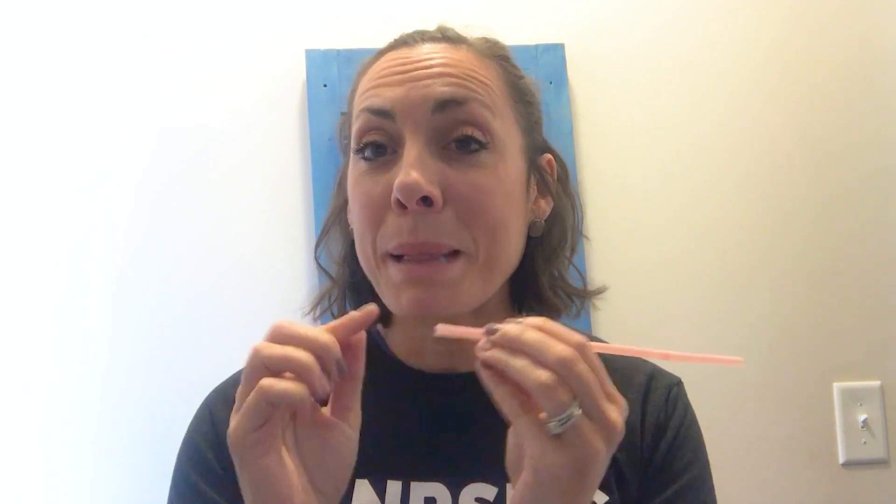Think of a straw as your vessel — that vascular system. If anything is occluding, we can't get anything through the straw, through the vessel. If you have plaque buildup in the artery — coronary artery disease — it's narrowing. The blood flow, good blood, healthy oxygen, all that cannot get to the heart tissue the way that it should.